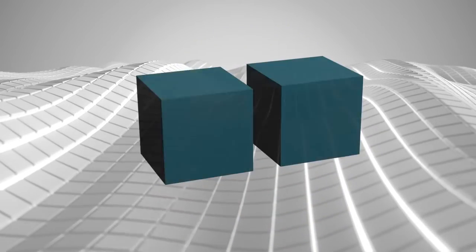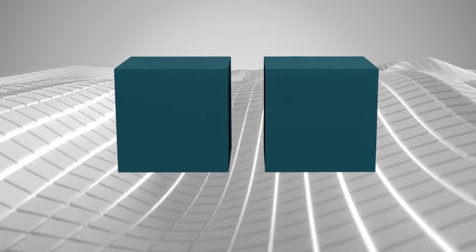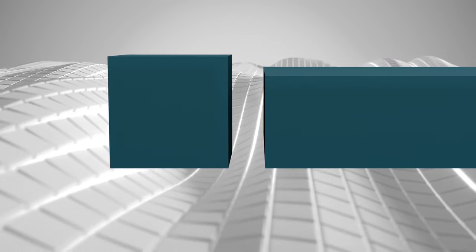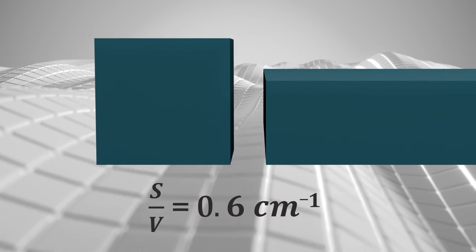To demonstrate how this works, let's imagine an aluminum cube with side lengths of 10 centimeters. Our 10 centimeter cube has a surface-to-volume ratio of 0.6 reciprocal centimeters.